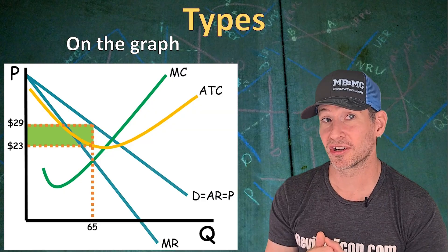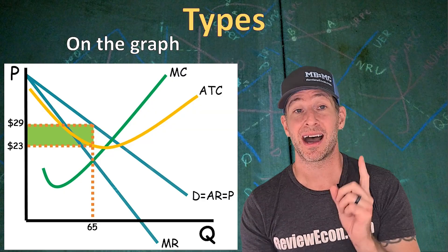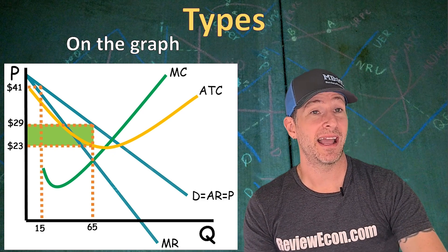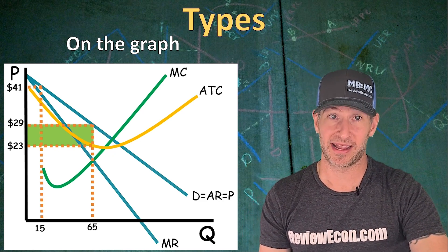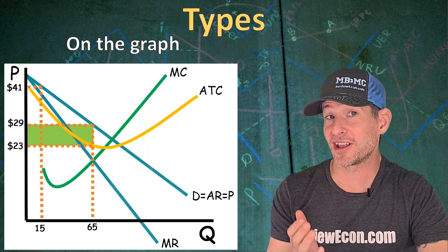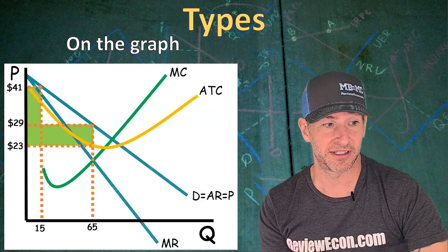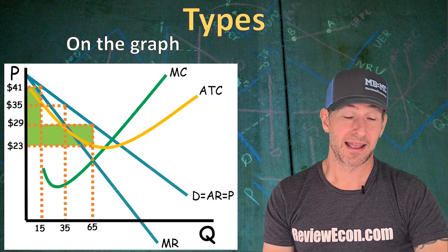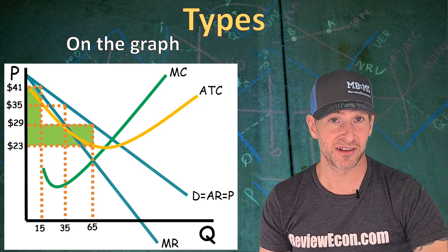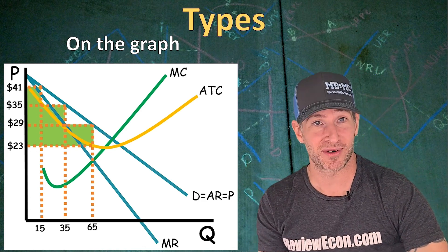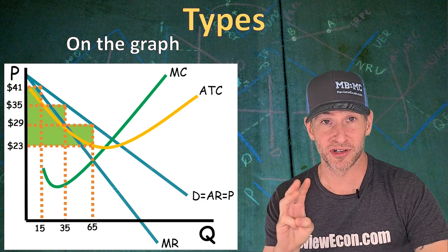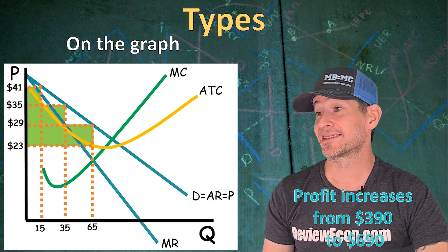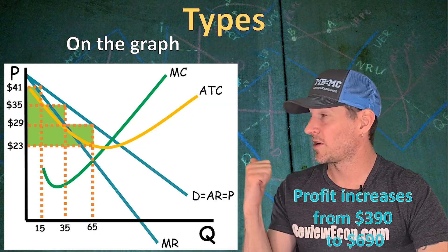But if this firm price discriminates, it can charge some consumers — the ones on the higher portion of that demand curve — higher prices, because the demand curve shows their willingness to pay. Those consumers were willing to pay much more than $29. The first 15 units had $41 as the potential price consumers were willing to pay. If they charge $41 for those first 15 units, we would have this additional area of economic profit. The next 20 units, up to unit 35, have $35 as the maximum price. By dividing consumers into three distinct groups and charging them the higher price they're willing to pay, the monopoly can increase economic profit from $390 — when it was a single price monopoly — all the way up to $690, shaded in green.